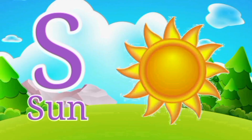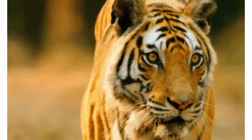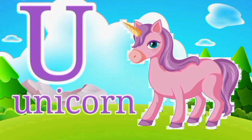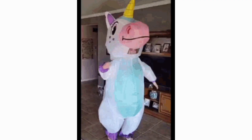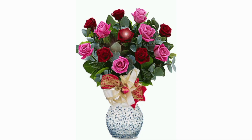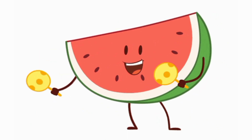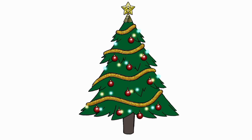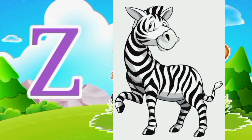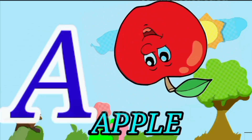S for Sun. T for Tiger. U for Unicorn. V for Van. W for Watermelon. X for Xmas. Y for Yak. Z for Zebra.